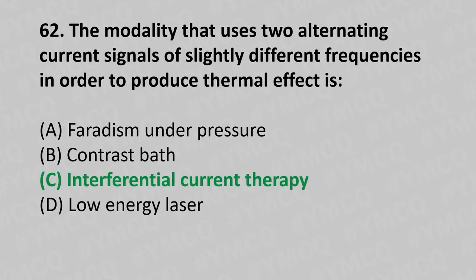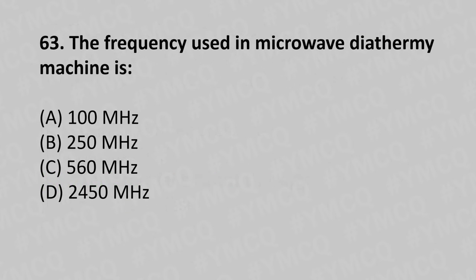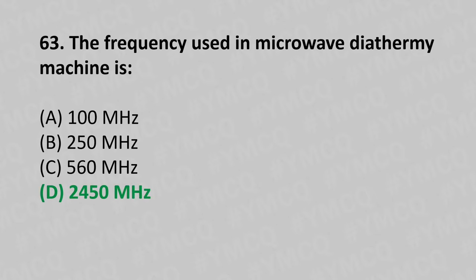Moving to our 63rd question. The frequency used in microwave diathermy machine is: Option A, 100 MHz; Option B, 250 MHz; Option C, 560 MHz; Option D, 2450 MHz. And the answer is Option D, 2450 MHz.